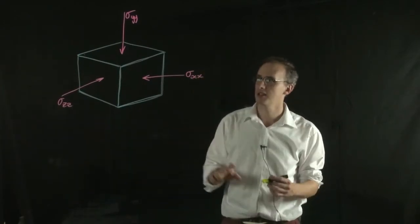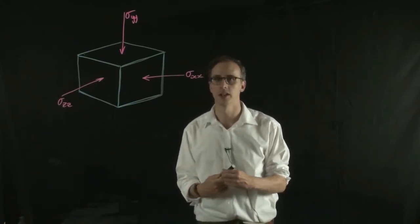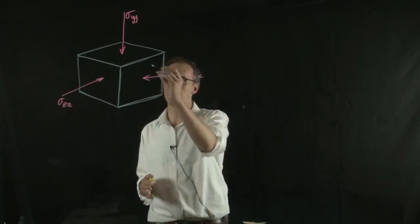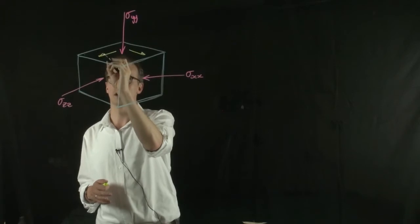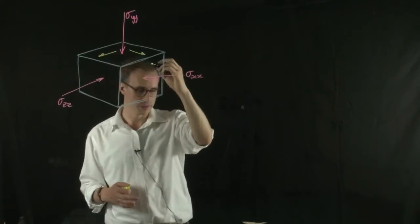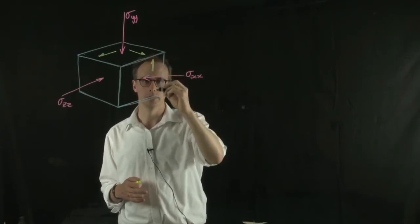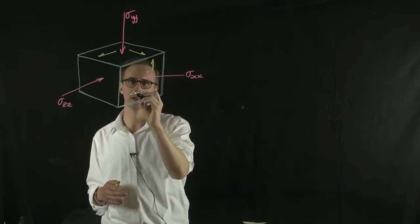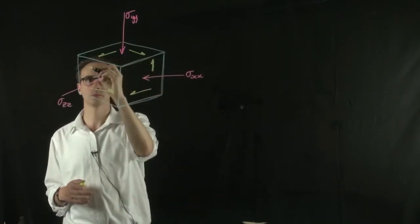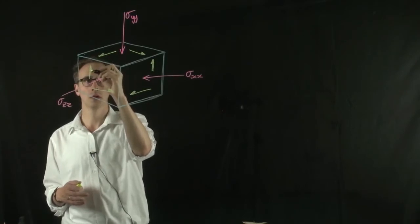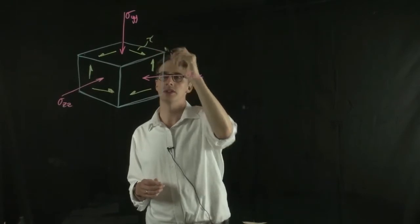We also represent shear stresses within this diagram, and I'll come back to what shear stresses are in a later video, but we represent them by arrows on the surface of these planes. And it's often half-arrows that they're represented as. And the convention for those is that we have tau, which is the shear stress.